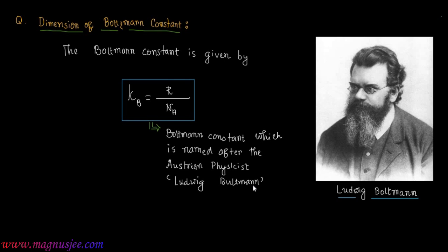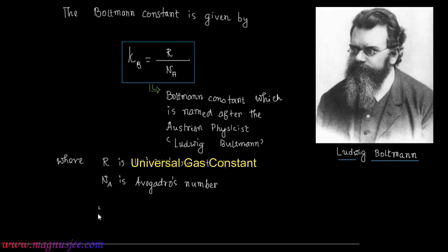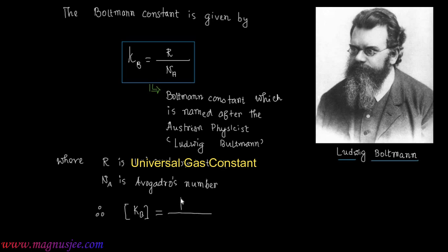Where R is the universal gas constant and Na is the Avogadro's number. Therefore, the dimension of K is equal to the dimension of R divided by the dimension of Na.